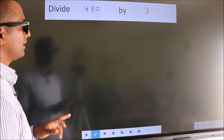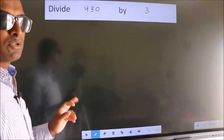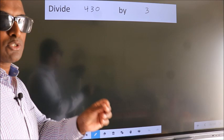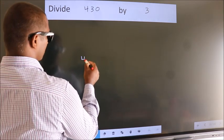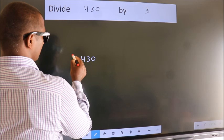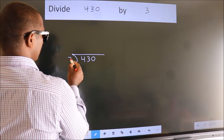Divide 430 by 3. To do this division, we should frame it in this way. 430 here, 3 here.